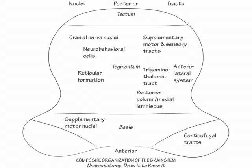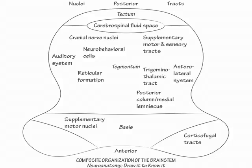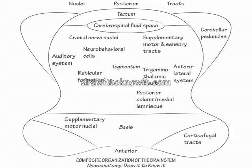Now, label the auditory system. The brainstem components of the auditory system are the superior olivary nucleus, trapezoid body, lateral lemniscus, and inferior colliculus. Next, label the cerebrospinal fluid space. And lastly, label the cerebellar peduncles. This concludes our drawing of the composite organization of the brainstem.